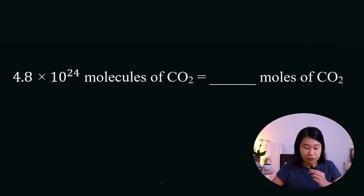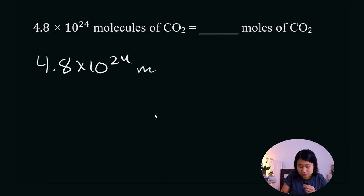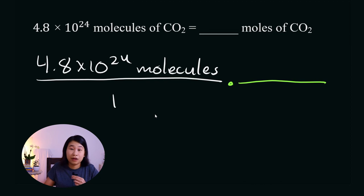Now try this problem on your own. 4.8 times 10 to the 24 molecules of CO2 is equal to blank moles of CO2. Using method number 2, I'm going to write what I'm given. So I'm given 4.8 times 10 to the 24 molecules. I'm going to put that over 1. And I'm going to have a new fraction, which is going to help me convert from molecules to moles.